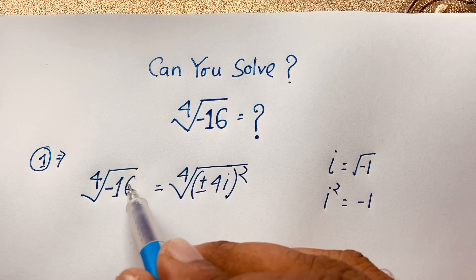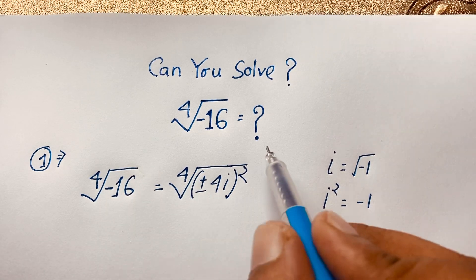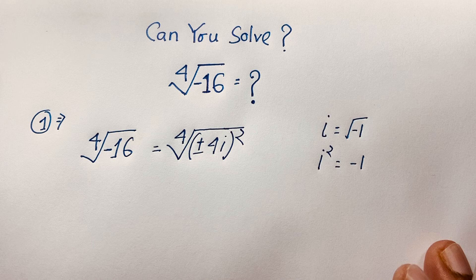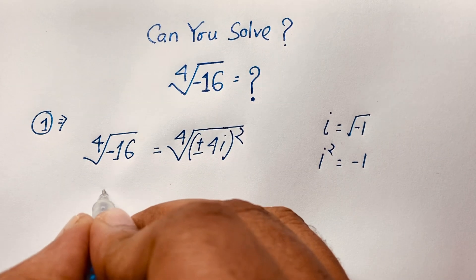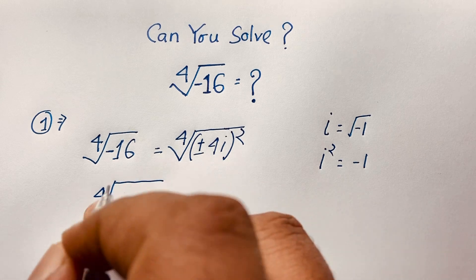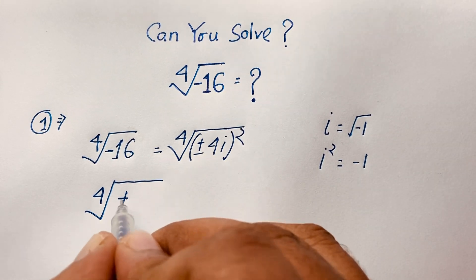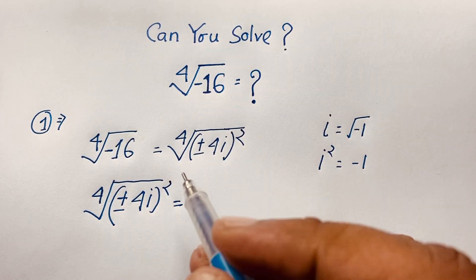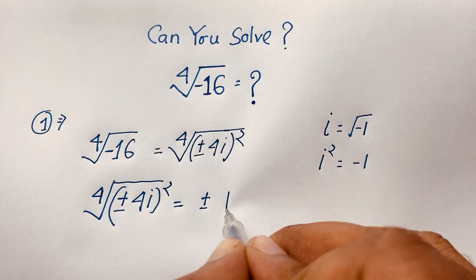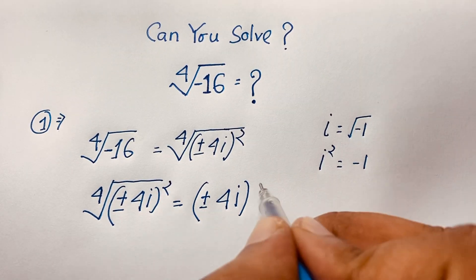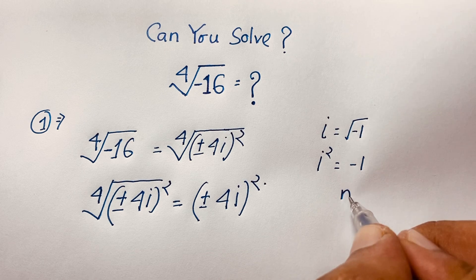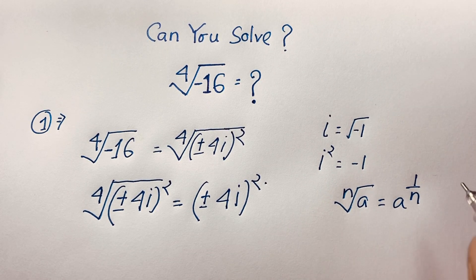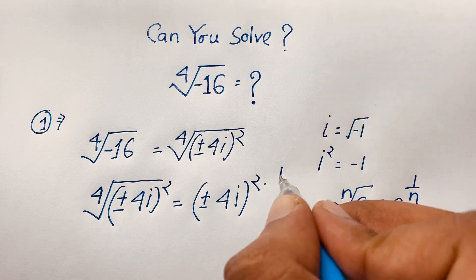So the 4th root of -16 equals the 4th root of (±4i)². Both are the same expression. Now I can apply the law that the n-th root of a equals a to the power of 1/n, so the 4th root means power 1/4.